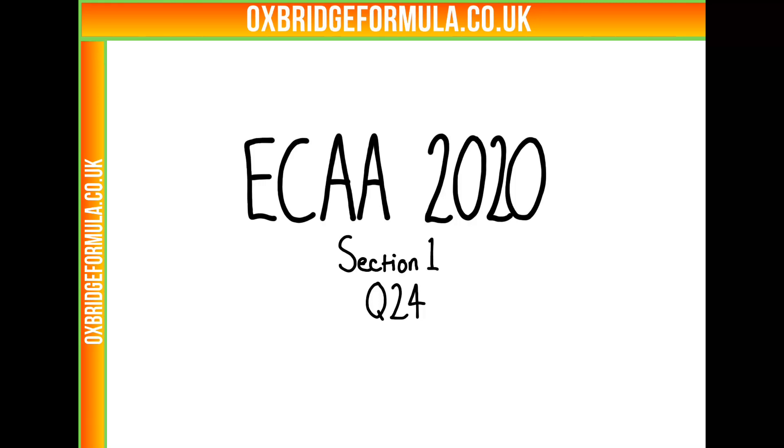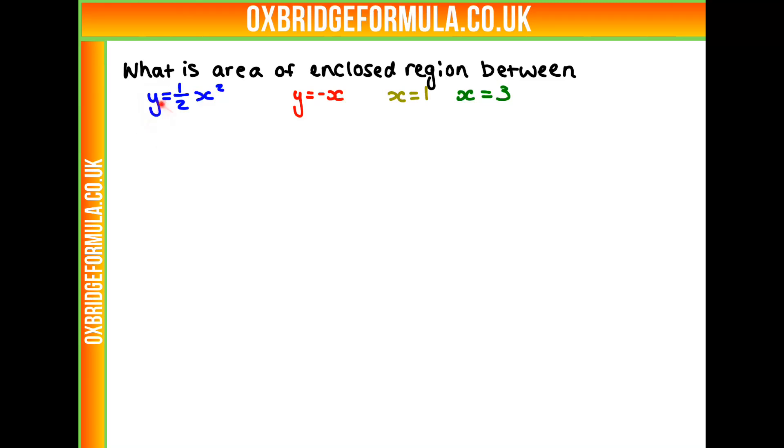In this video, we're looking at ECHA 2020, section 1, question 24. We're asked to find the area of the enclosed region between these four lines: y equals half x squared, y equals minus x, x equals 1, and x equals 3.